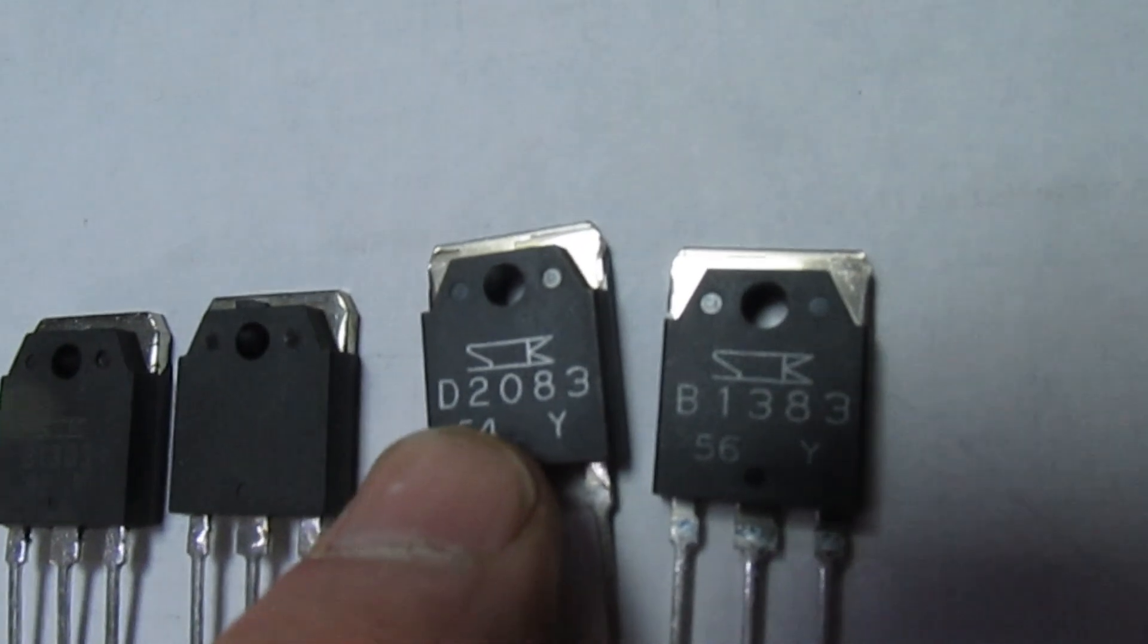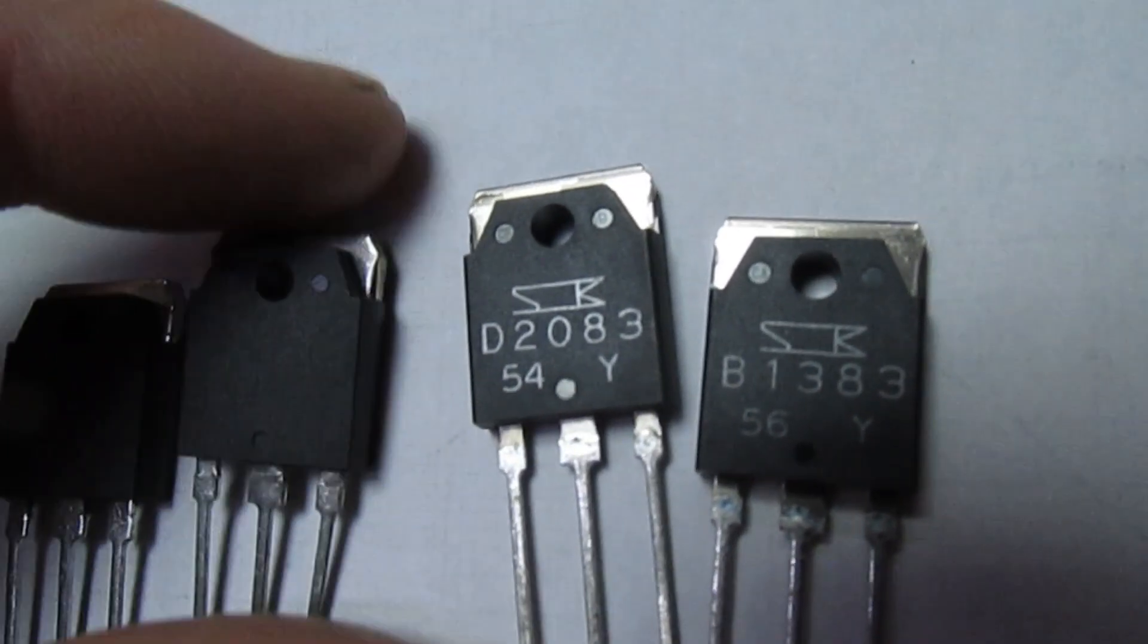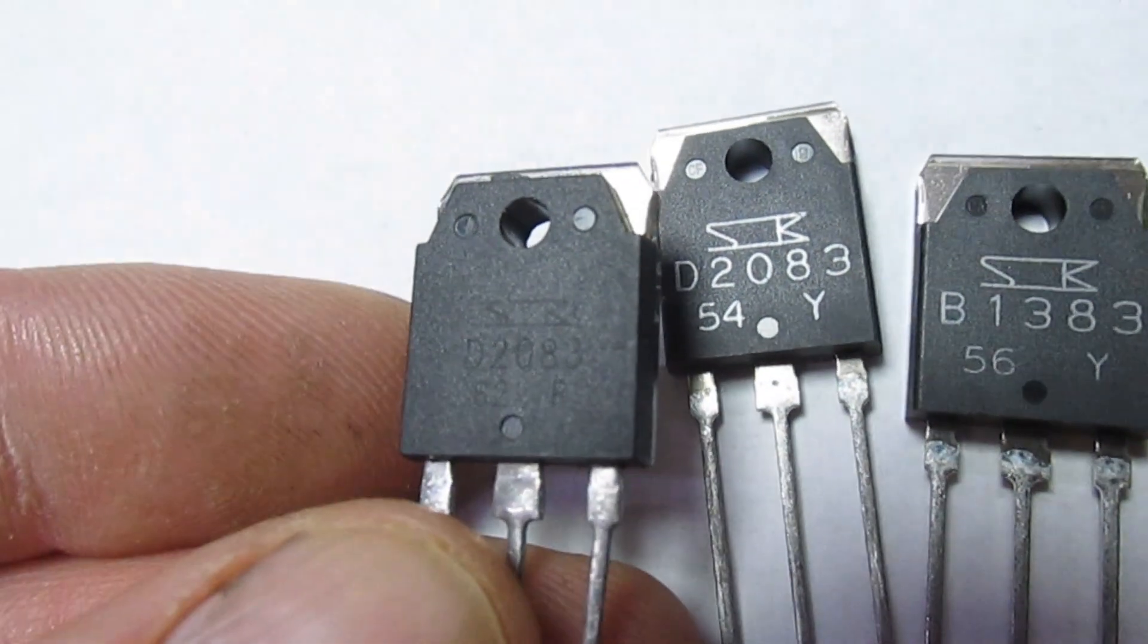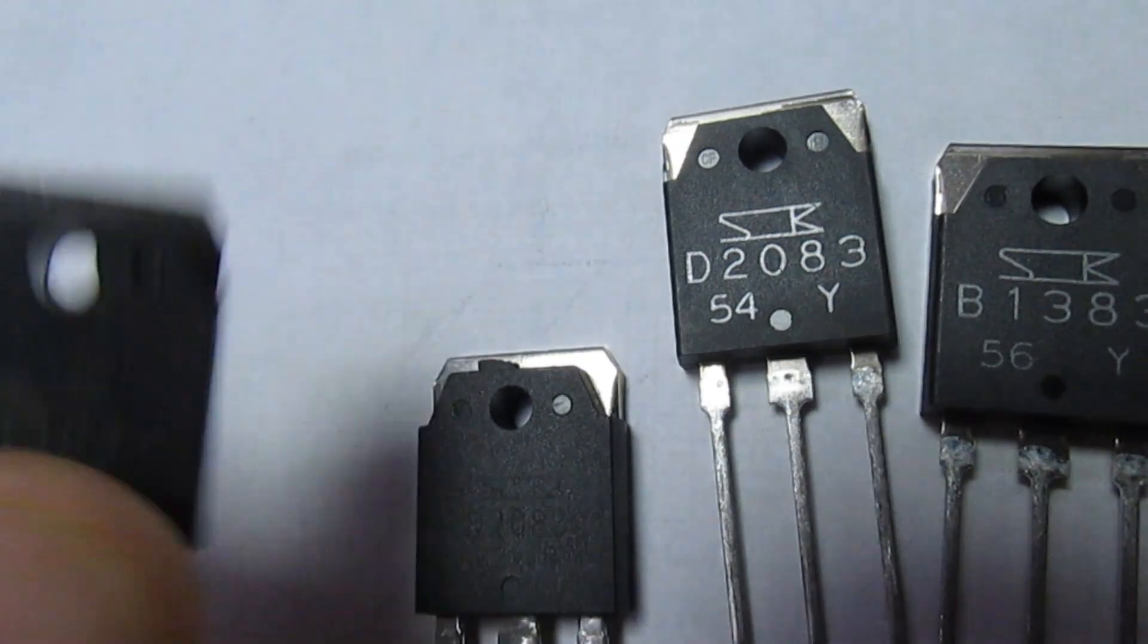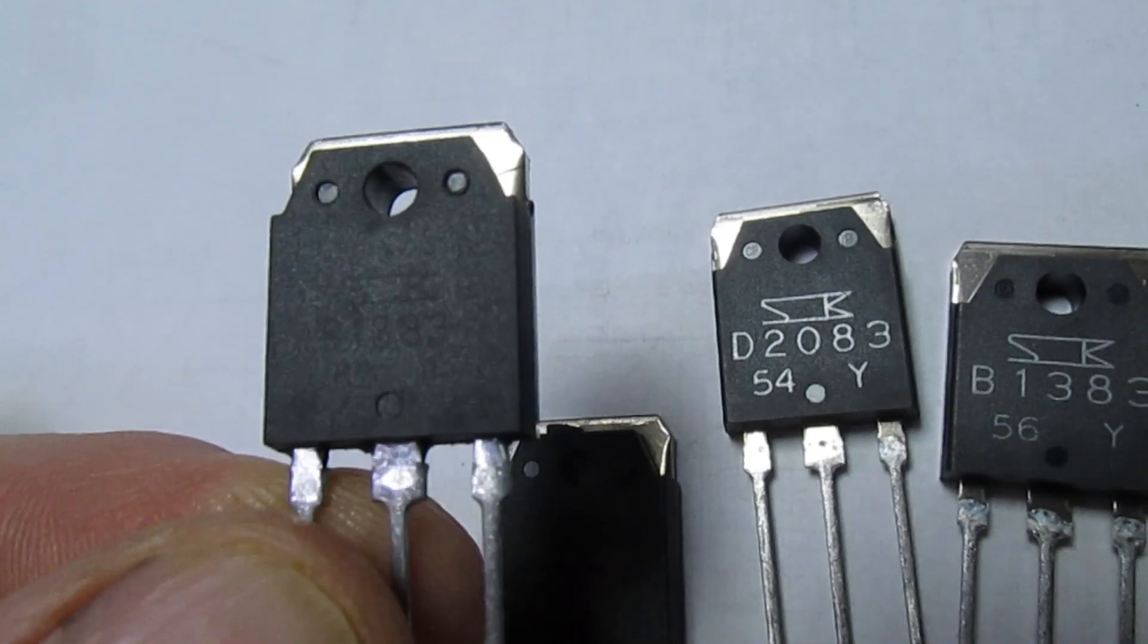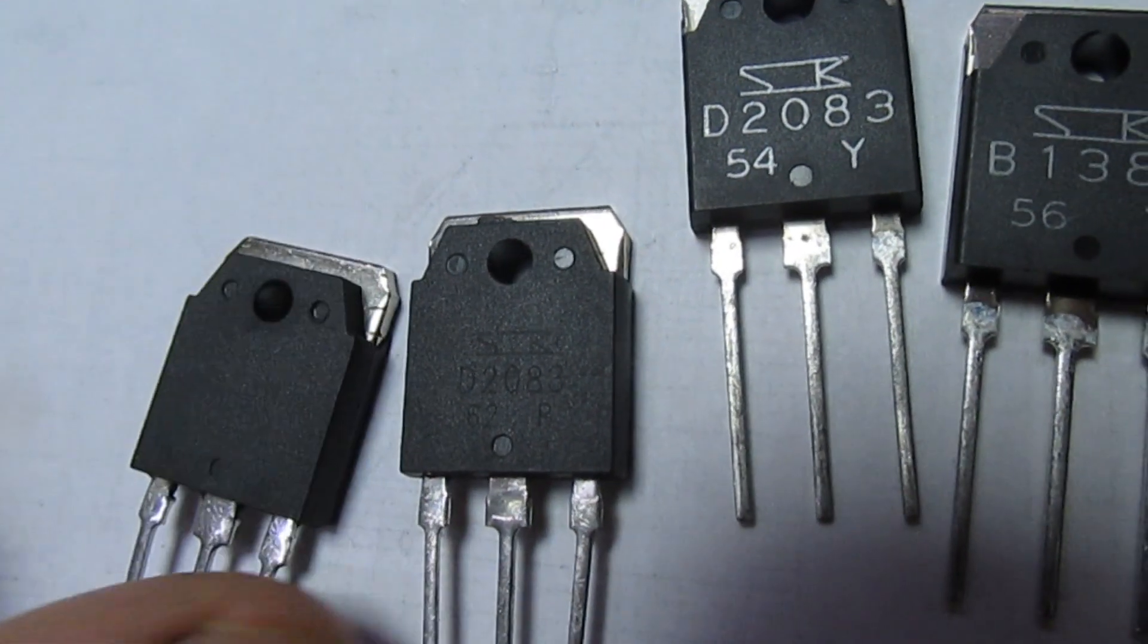The very first thing that should set the alarm bells ringing: if you look at the genuine ones from Sanken Electronics, the numbers are painted on with a silver paint, whereas on the fake ones it's laser printed on.